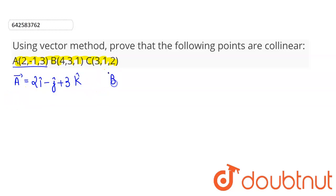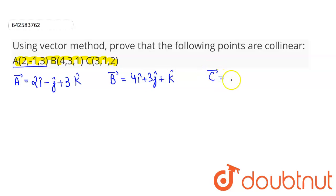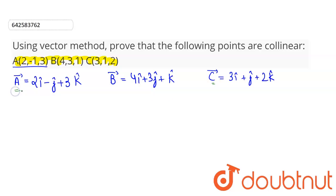Similarly, the position vector of B will be 4i-cap plus 3j-cap plus k-cap, and the position vector of point C will be 3i-cap plus j-cap plus 2k-cap. So this is the position vector of point B, this is the position vector of point C, and this is the position vector of point A.